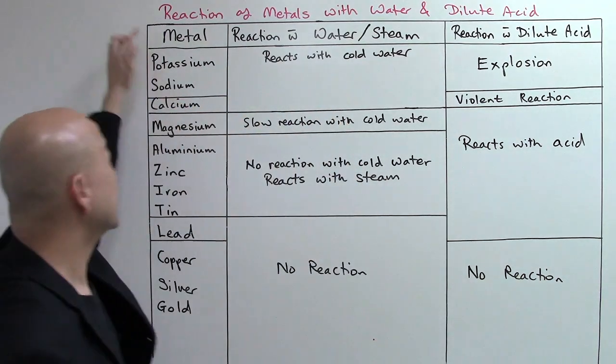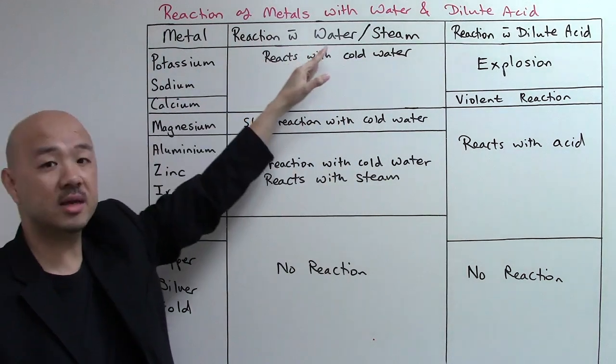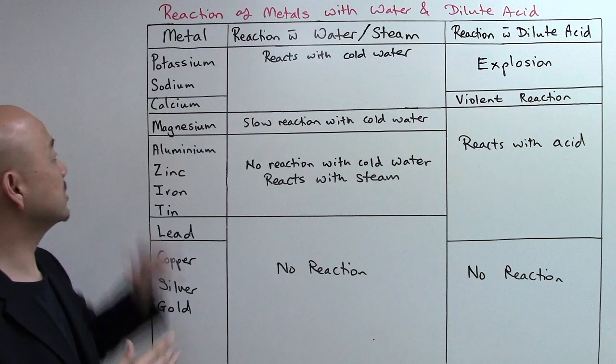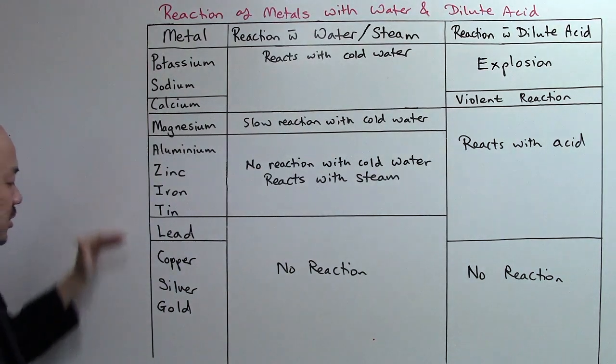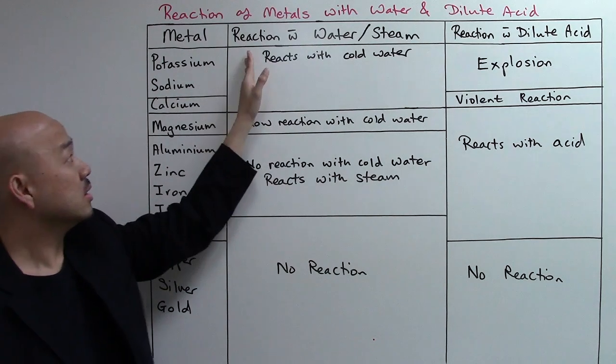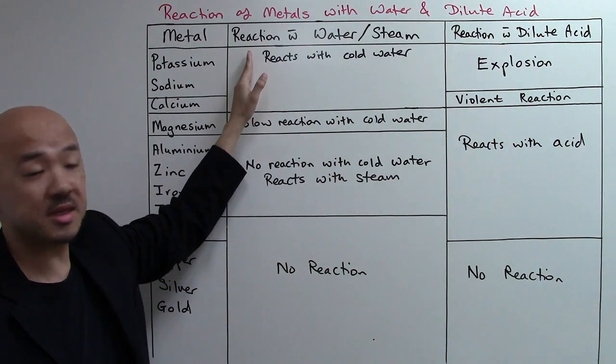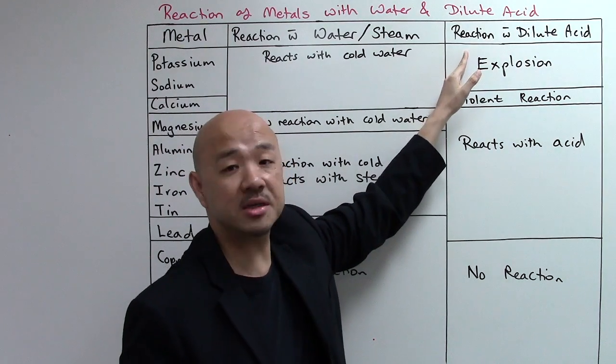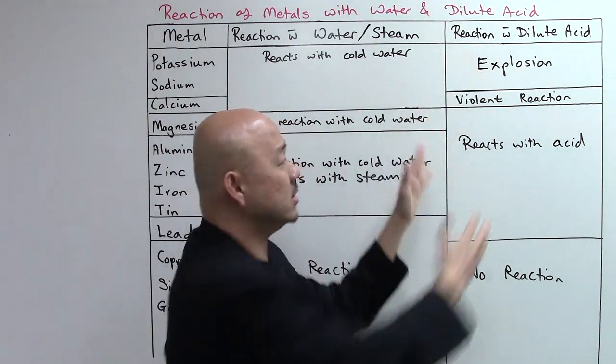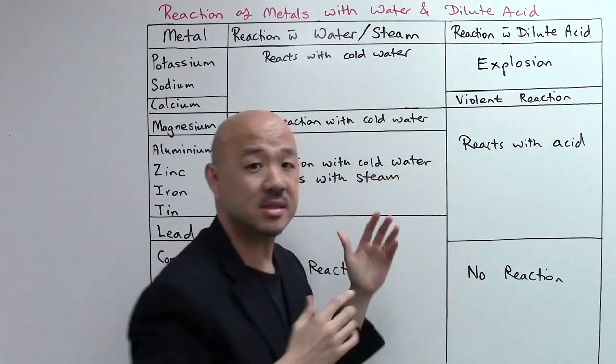This is reaction of metals with water and dilute acid. Here are the metals in the reactivity series - potassium all the way to gold. This column is reaction with steam or water, and this column will be reaction with dilute acid.